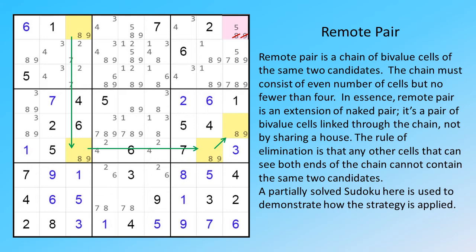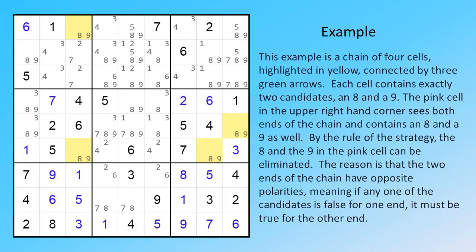A partially solved Sudoku here is used to demonstrate how the strategy is applied. This example is a chain of four cells, highlighted in yellow, connected by three green arrows. Each cell contains exactly two candidates, an eight and a nine.